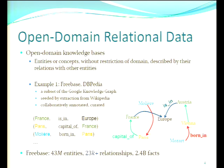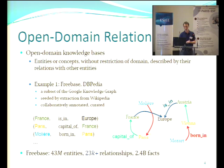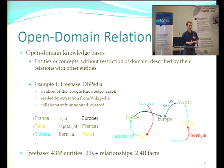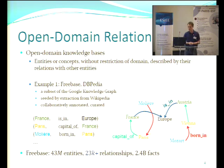Freebase is a subset of the Google knowledge graph, seeded from automatic extraction from Wikipedia. It's basically a set of entities — it started with Wikipedia topics, but now contains any kind of music tracks, artists, movies, celebrities, countries, and essentially everything. It contains 43 million entities — 43 million topics — which are linked together by more than 23,000 relationships.